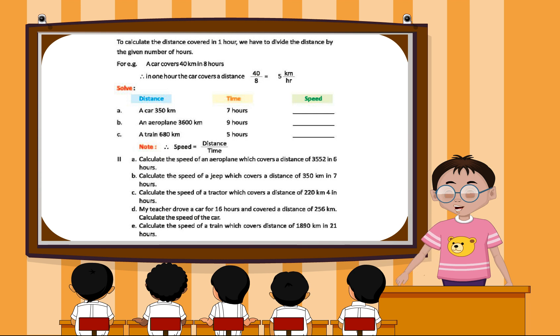Solve. Distance and Time: A car travels 350 km in 7 hours. An aeroplane travels 3,600 km in 9 hours. A train travels 680 km in 5 hours. Note: Therefore, speed equals distance divided by time.